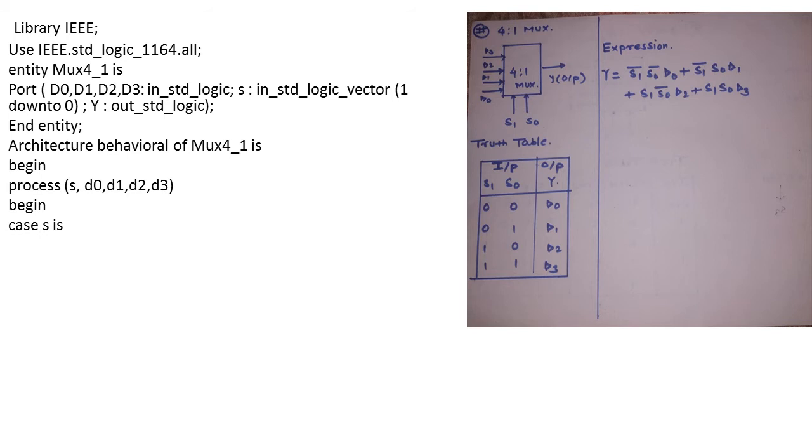Now I will declare the case expression as case s is, that stands for case select line is. The select line combinations are going to be 00, 01, 10, and 11. We will write when the select line combination is 00, y should be connected to d0, so y <= d0. Similarly when 01 your output is connected with d1, for 10 combination output y is connected with d2, and for 11 y is connected with d3.